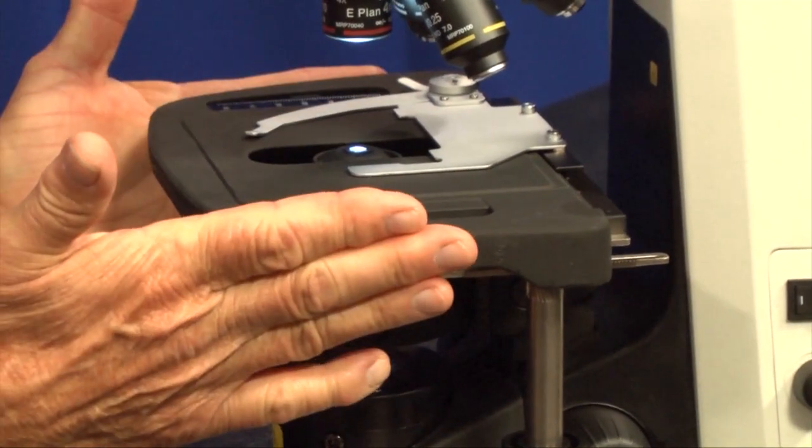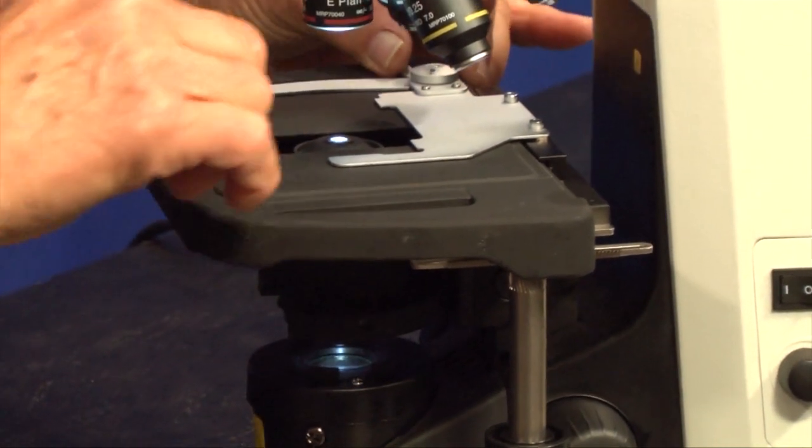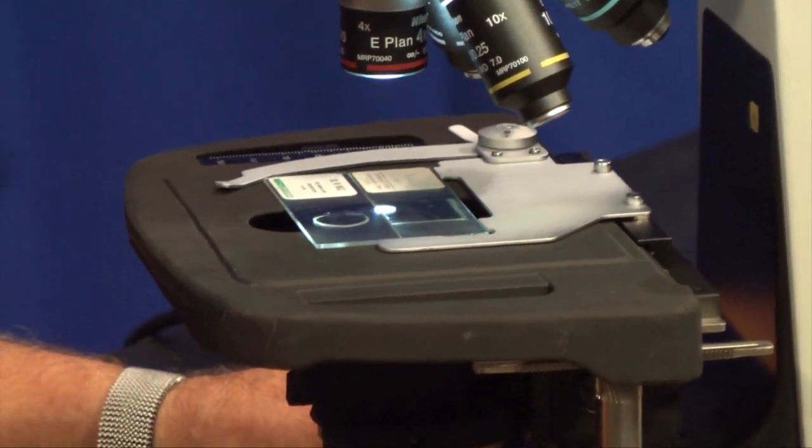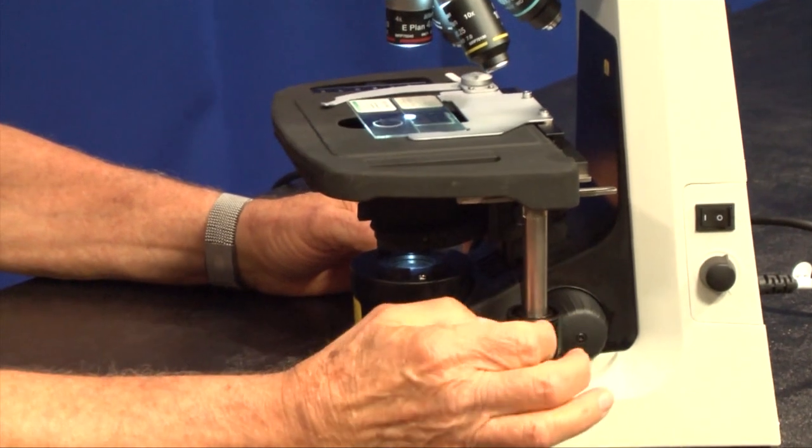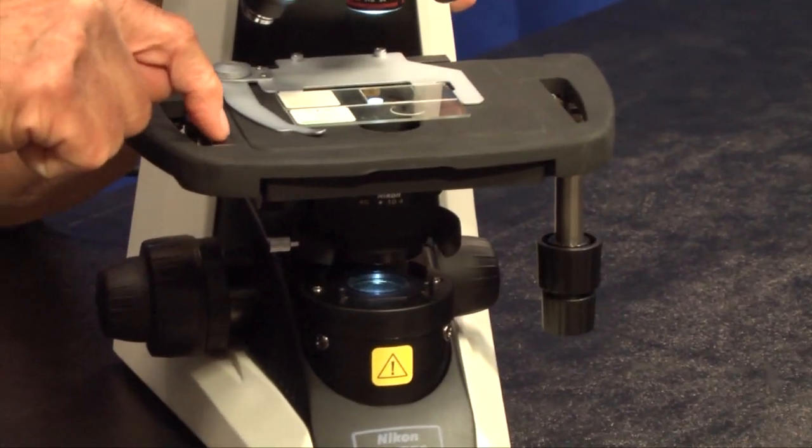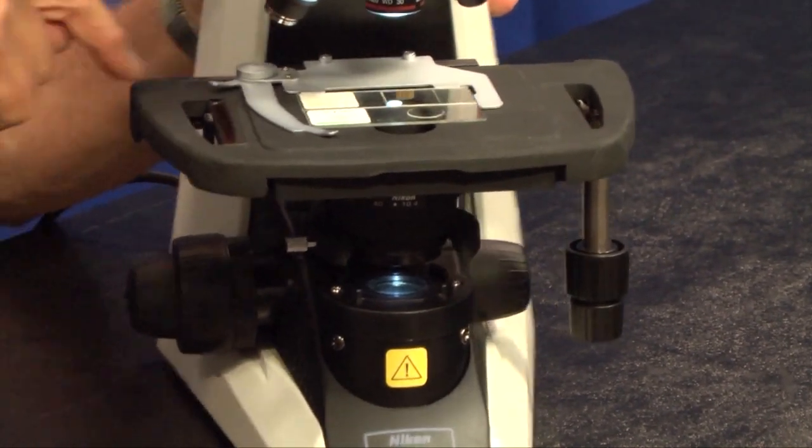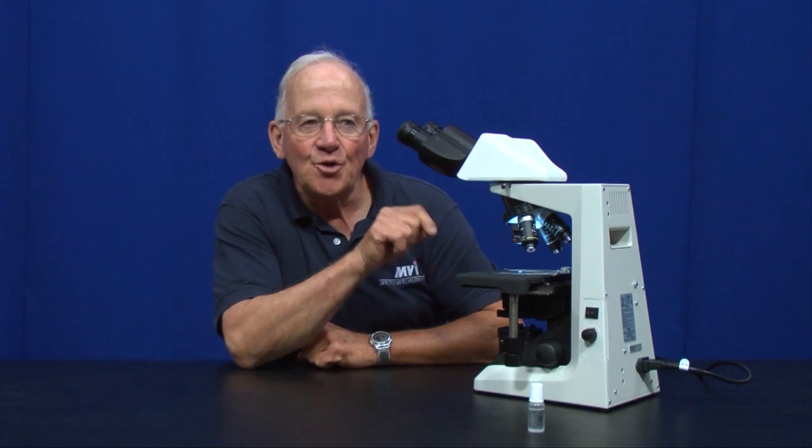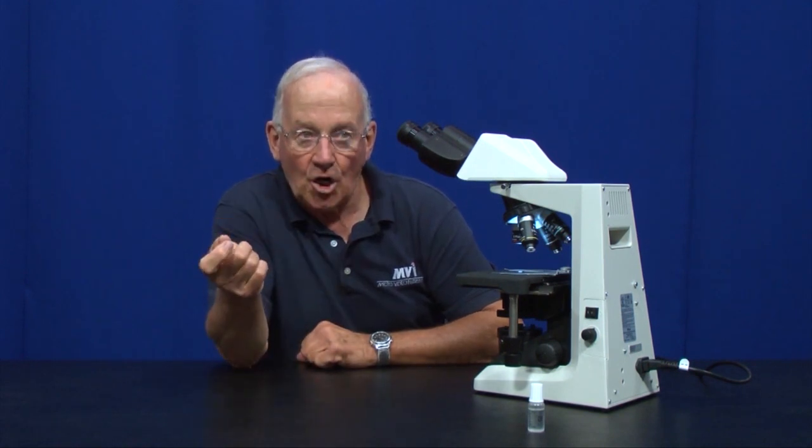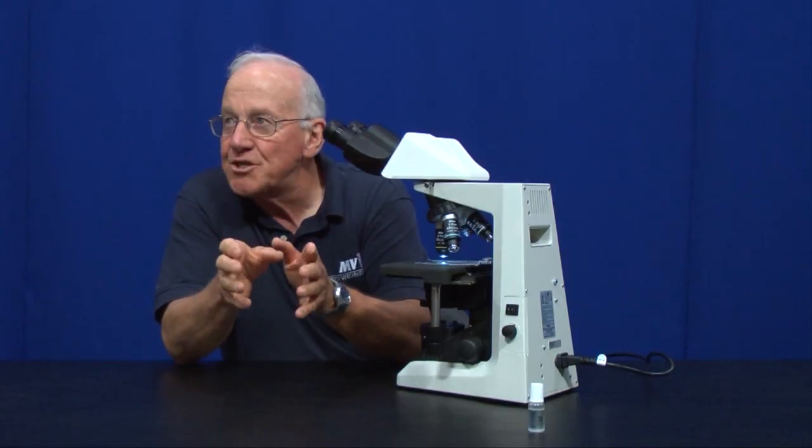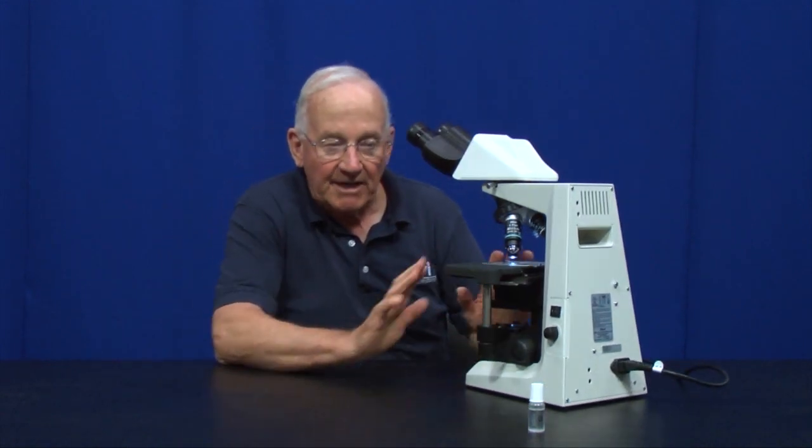The next thing we're going to talk about is the stage of the microscope. The stage is the device that accepts the slides and allows you to move the slide in an XY direction with its low drive XY shaft right here. The stage is also graduated with gradations on the side and in the back. Its only purpose is that if you find something on a slide that is very interesting and you wanted to show a colleague, you could denote the location of it. That's the purpose of a graduated mechanical stage.